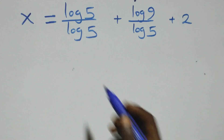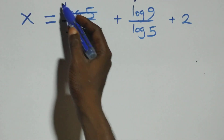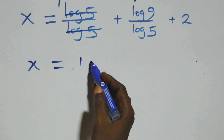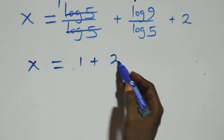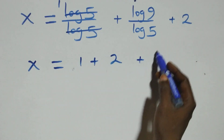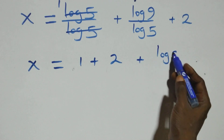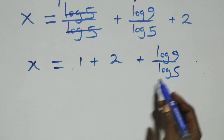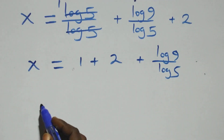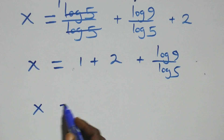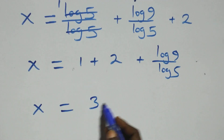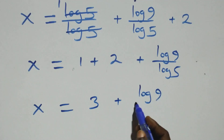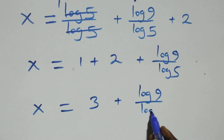Next step: log 5 cancels each other, leaving 1 here, which implies x equals to 1 plus 2 plus log 9 over log 5. So here it becomes x equals to 3 plus log 9 over log 5.